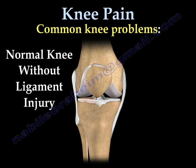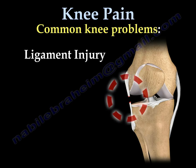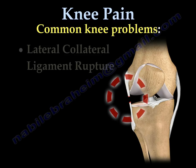This is a normal knee without ligament injury. You can see the medial and lateral collateral ligaments and the ACL in the middle of the knee. This is an example of a knee injury — you can see the lateral collateral ligament is injured.